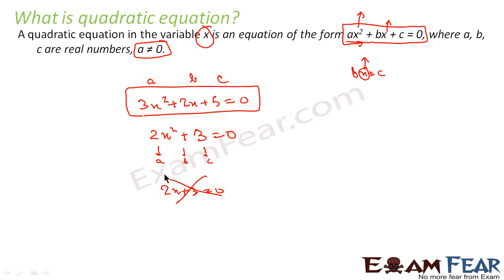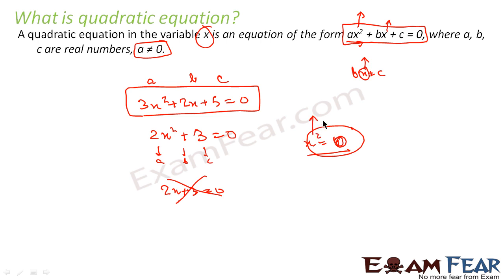If both b and c are zero, that is also okay. For example, x² = 4 or x² = 0 are also quadratic equations because the a component is not zero — a is one. So, a quadratic equation is an equation of the form ax² + bx + c = 0 where a should not be equal to zero, and a, b, and c are real number constants.